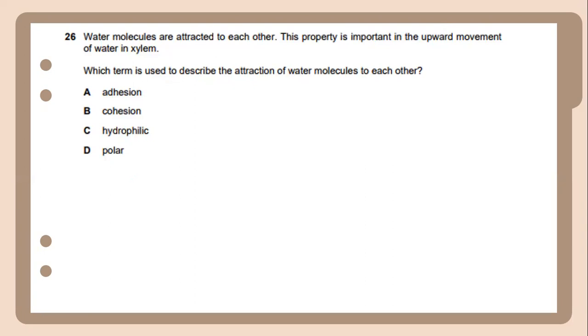Twenty-six. Water molecules are attracted to each other. This property is important in the upward movement of water in xylem. Which term is used to describe the attraction of water molecules to each other? The term used to describe the attraction of water molecules to each other is called cohesion.